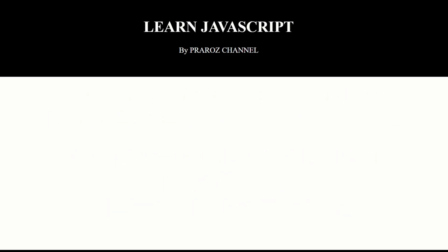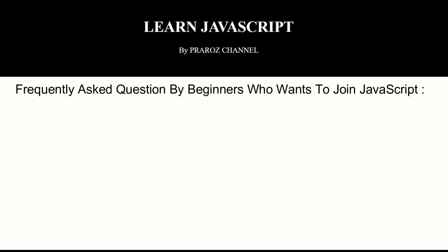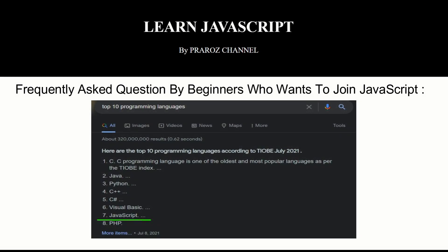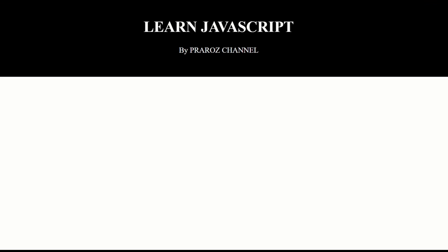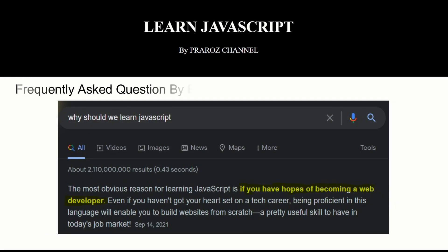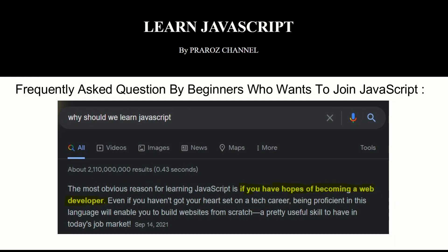Here are some frequently asked questions by beginners who want to get into JavaScript. Is JavaScript a top 10 programming language? Yes, JavaScript is a top 10 programming language — it sits at number 7 in 2021. Why should we learn JavaScript? Because if you have a hope of becoming a web developer, being proficient in this language will enable you to build a website from scratch.